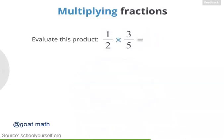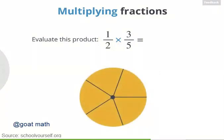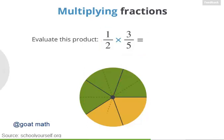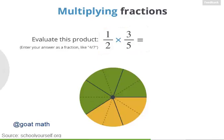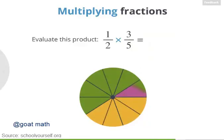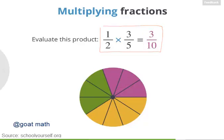Now what happens if we multiply one fraction by another fraction, like 1 half times 3 fifths? You can think of this as starting with a group that represents 3 fifths and then taking half of it. Here's a dot — let's shade in 3 fifths of it. 1 half times 3 fifths represents half of this green region. Let's divide this dot into a few more equal slices. Half of the green region is these purple slices. So 1 half times 3 fifths equals 3 tenths — we have ten equal slices and three of them are purple.